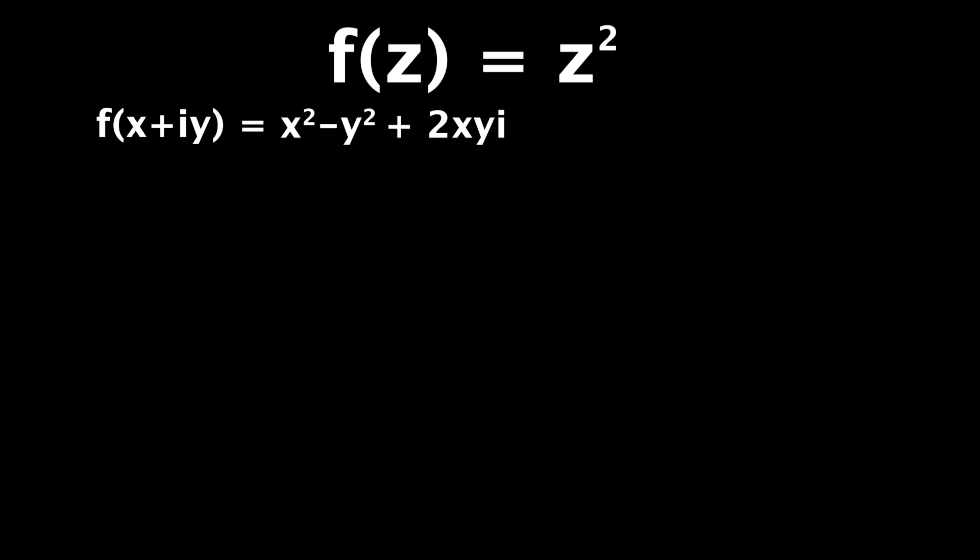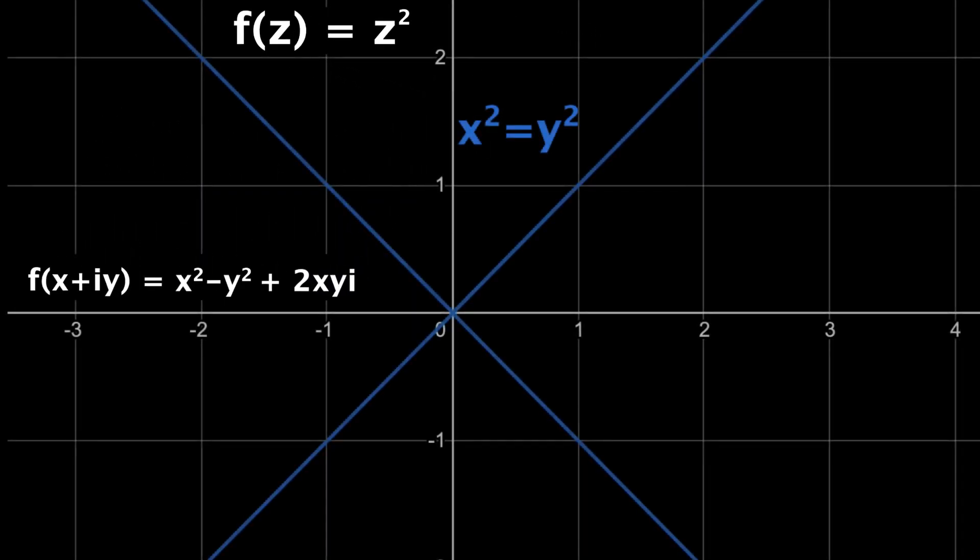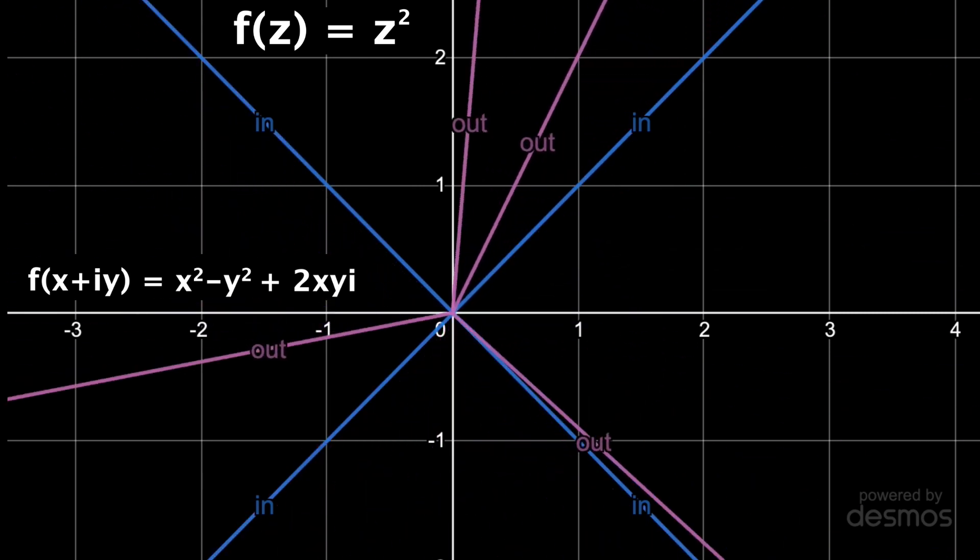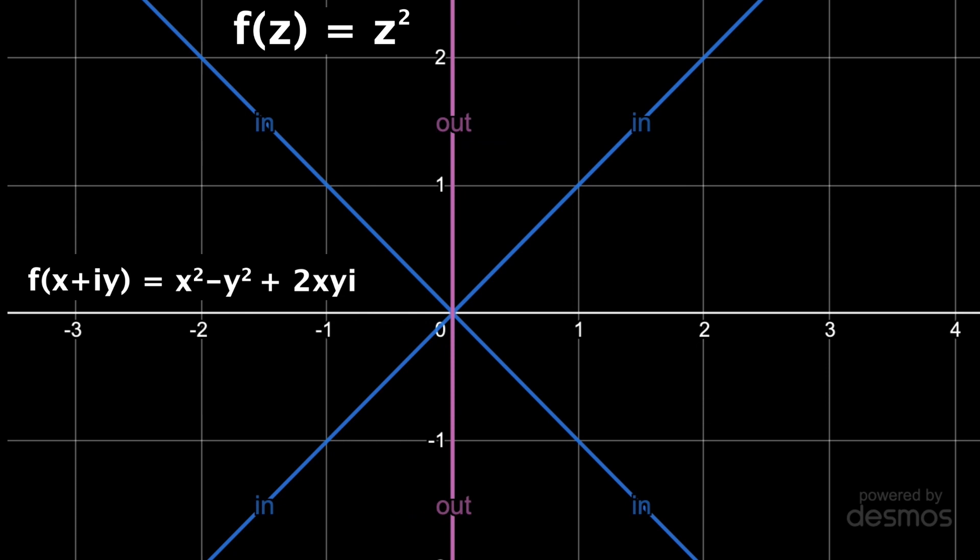But now it's easy to see some interesting properties. One example is that the real component of our output will be 0 whenever x squared equals y squared. I'll move these aside so we can see the plot of x squared equals y squared in blue and I'm using Desmos for the rest of this video. So what this equation tells us is that if I input any point on these lines the function z squared will map it to the imaginary axis where the real component is 0. 1 plus i is an example of a point on those blue lines and like we saw 1 plus i squared is 2i right on the corresponding output line.